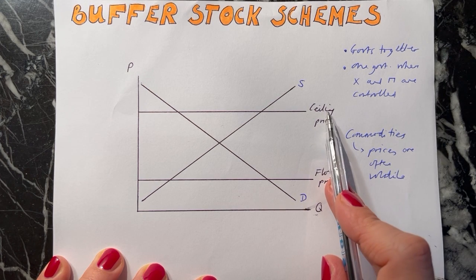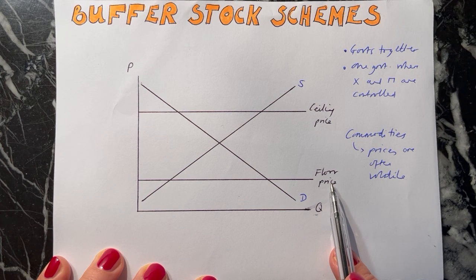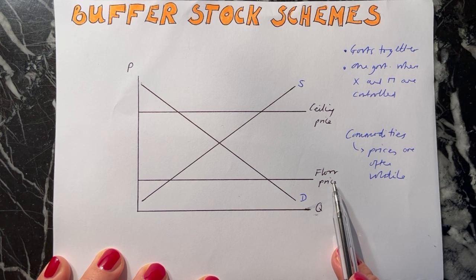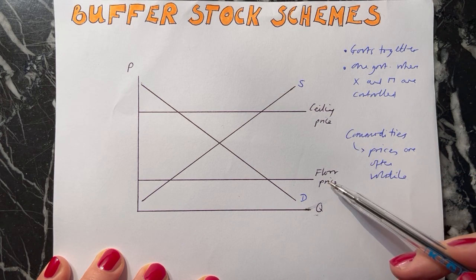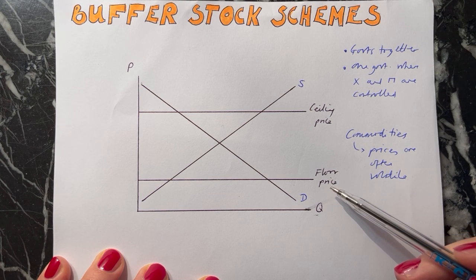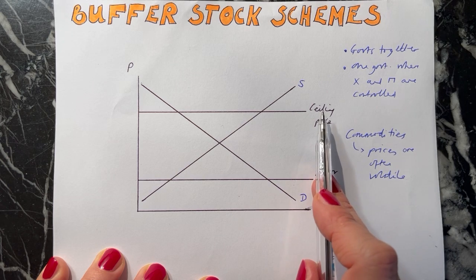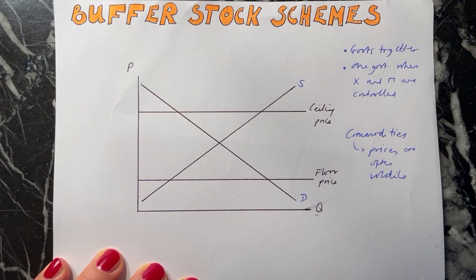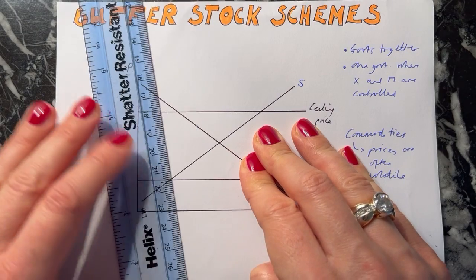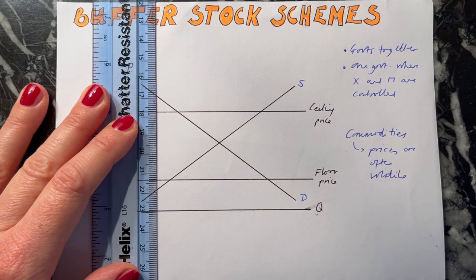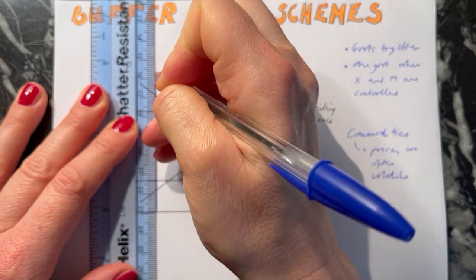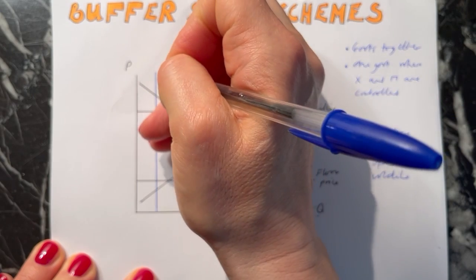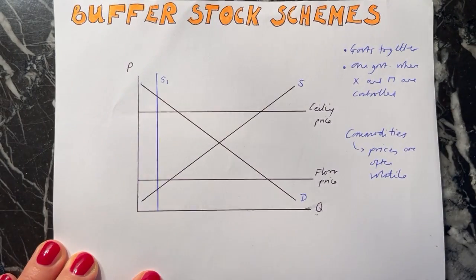Sometimes this might be called the maximum price and this the minimum price - but be careful, because they are in the opposite position to how they would be for a normal maximum and minimum price government intervention. So we'll call it the ceiling price and the floor price. What then happens is that you need to know what your harvest is in a certain year. This will be a perfectly inelastic line, because it's just a fixed amount of product which is harvested.